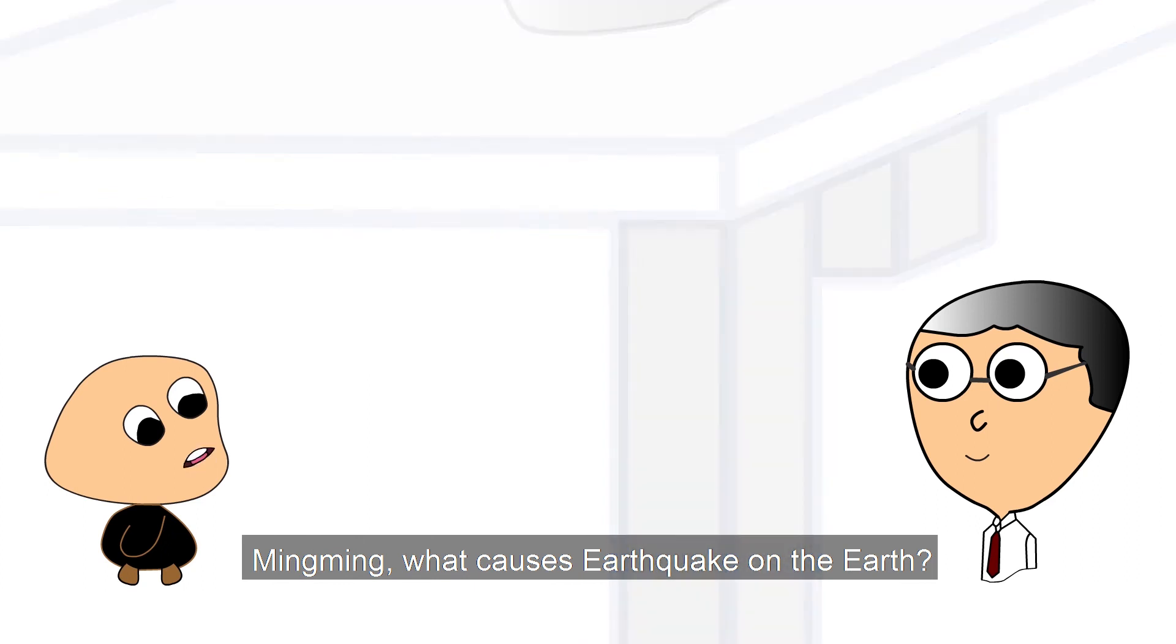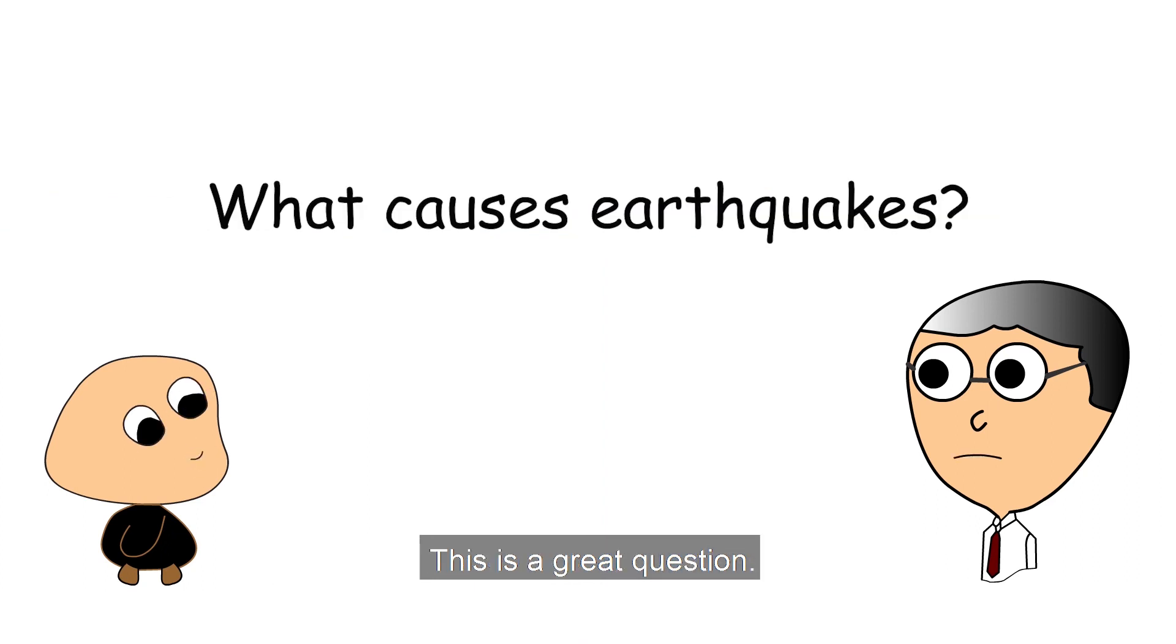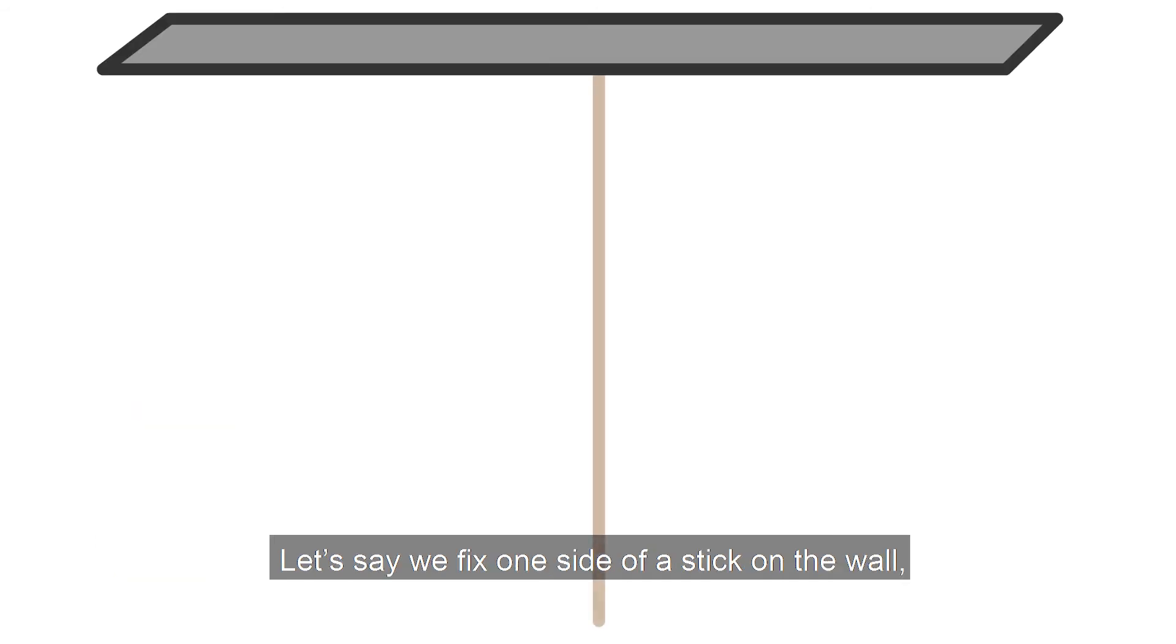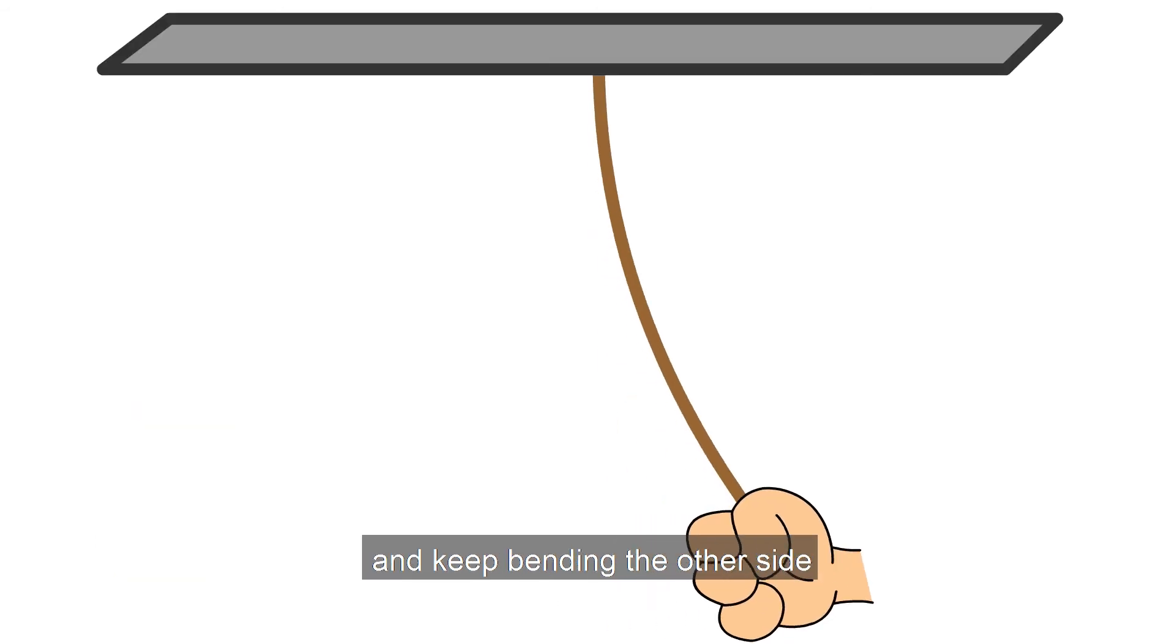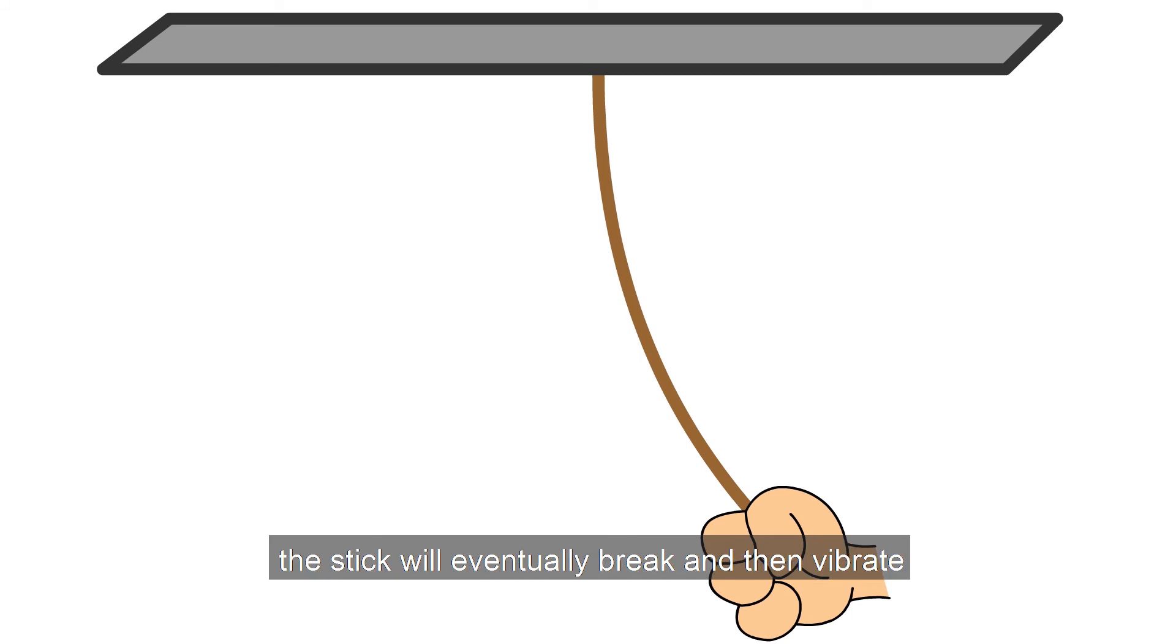Mingming, what causes earthquake on earth? This is a great question. Let me show you an example first. Let's say we fix one side of the stick on the wall and keep bending the other side. The stick will eventually break and then vibrate.